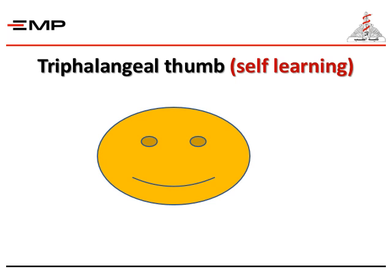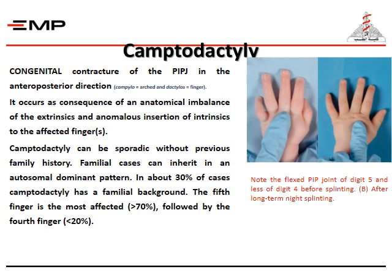Here is the triphalangeal thumb. Camptodactyly is a congenital contracture in the anterior-posterior direction of the PIP joint. It occurs as a consequence of anatomical imbalance of the extrinsic tendons and anomalous insertions of intrinsic muscles to the affected finger or fingers. Camptodactyly can be sporadic or familial, inherited in an autosomal dominant pattern in about 30% of cases. The fifth finger is the most affected in more than 70% of cases, followed by the fourth finger in less than 20% of cases.